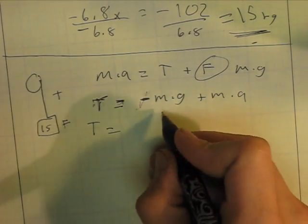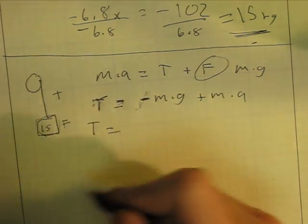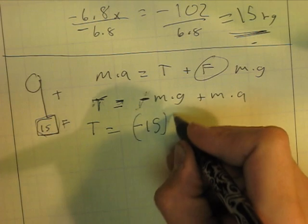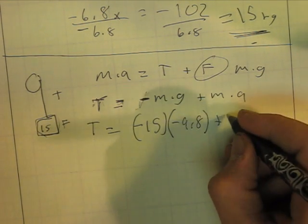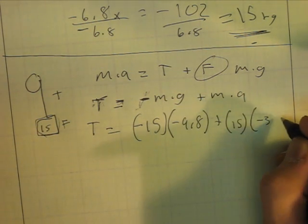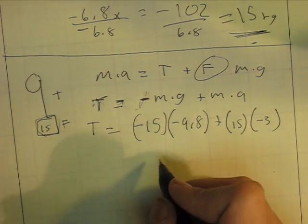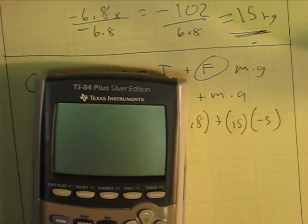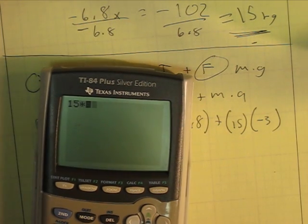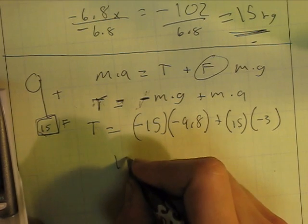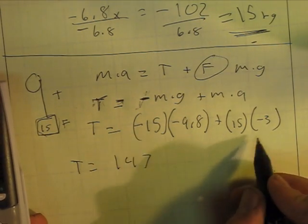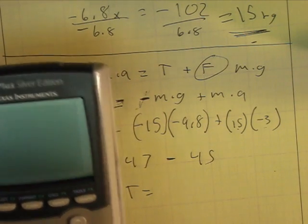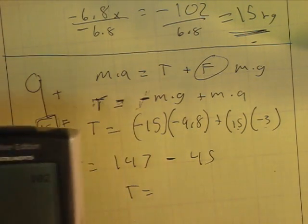So our M is 15 now. We don't have to worry about the other one because we're only solving for one side. So negative 15 times gravity which is negative 9.8, and then plus our mass again so it's 15, and then times acceleration which is negative 3. So negative 15 times negative 9.8 is, actually I need my calculator, 15 times 9.8 equals 147. T equals 147 minus, because this is going to be a negative, and then so 45. So T equals 147 minus 45 equals 102 N.